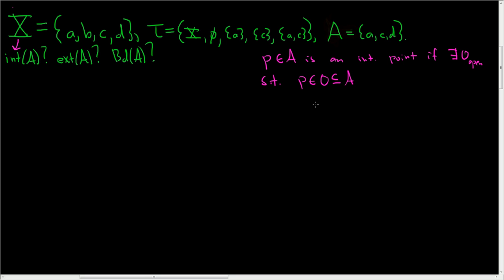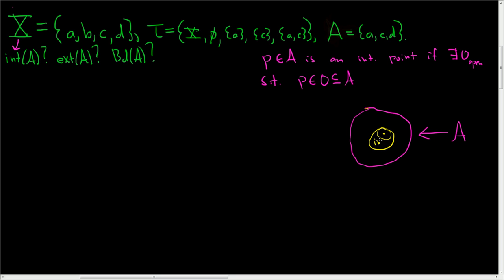What does that mean intuitively? Let's look at a picture. Let's say this is A, and let's say this yellow dot is little p. So if little p is an interior point, that means there is some open subset O in X — this is an open set in X — that's contained entirely in A. This would be an example of what an interior point looks like. The interior of A would be the set of all interior points — maybe all of this here. So that's Int A.